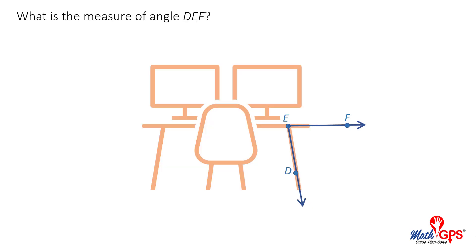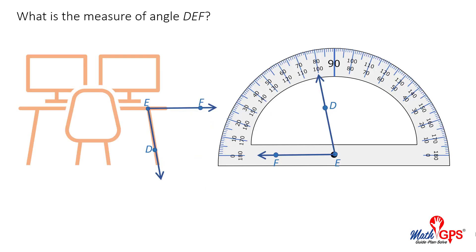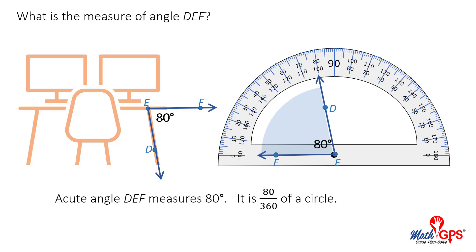What is the measure of angle DEF? Place the vertex of the angle on the location point at the bottom of the protractor. Turn the angle so that one of the rays points to zero degrees. Does the angle measure 80 degrees or 100 degrees? How do you know? Angle DEF is an acute angle. Therefore, it measures 80 degrees. It is 80/360ths of a circle.